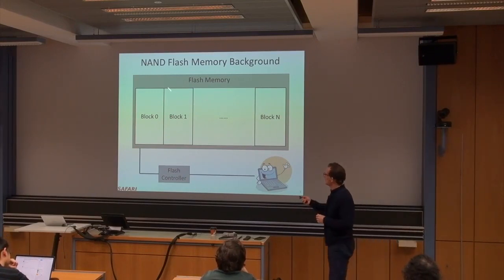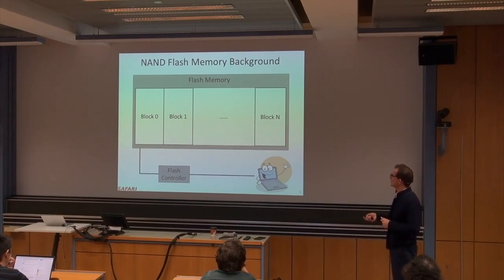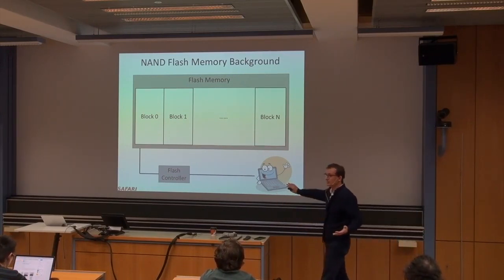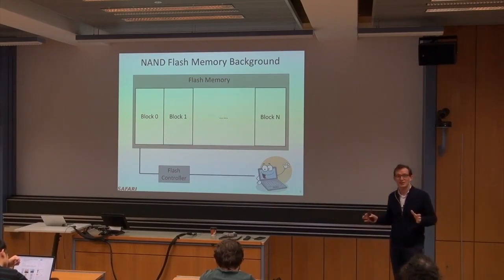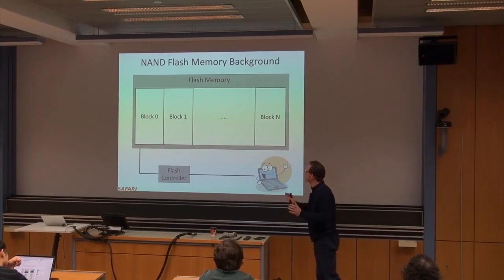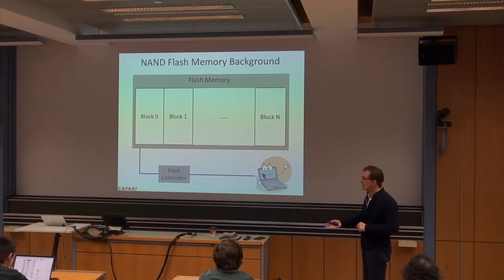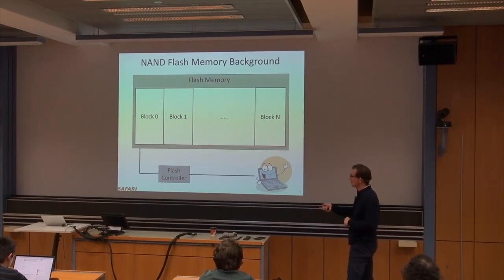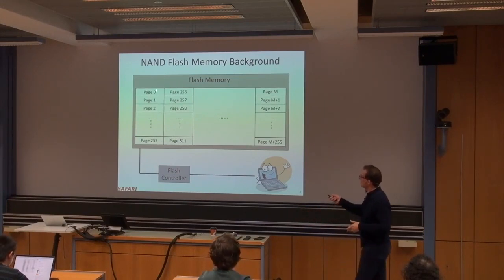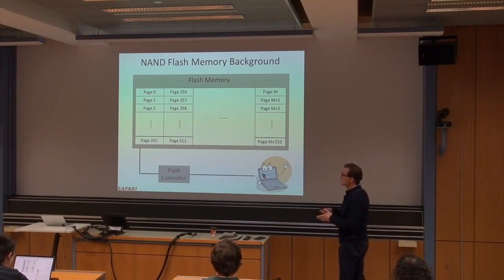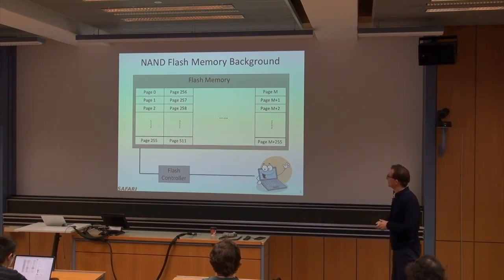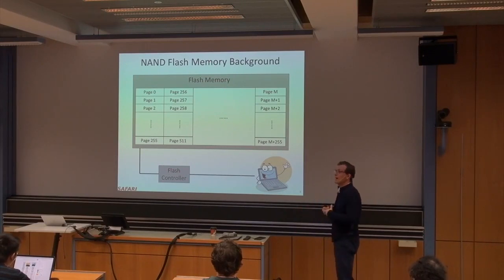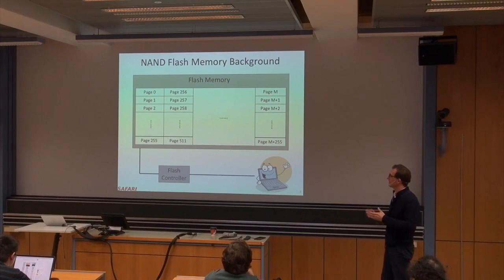The memory array is divided into blocks. Whenever you need to write something, you first erase an entire block — erase granularity is at the block level, to minimize the cost of erases. But you can write and read at the page granularity. A block can have 256 pages, and each page is about 8 to 16 kilobytes. Erasing sets the voltage level to the minimum for the entire block.